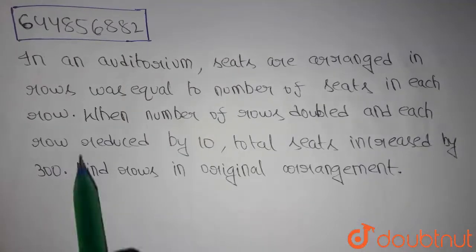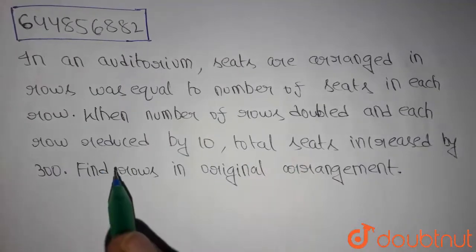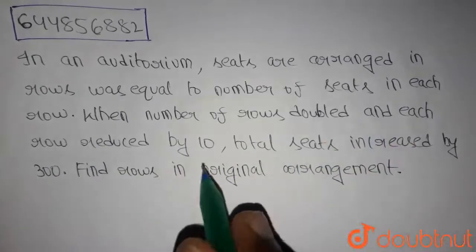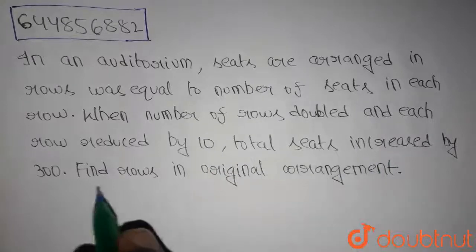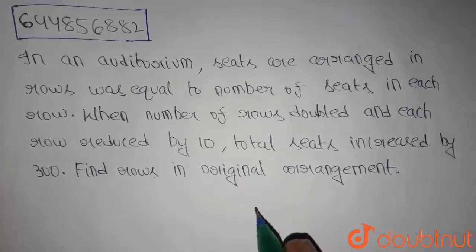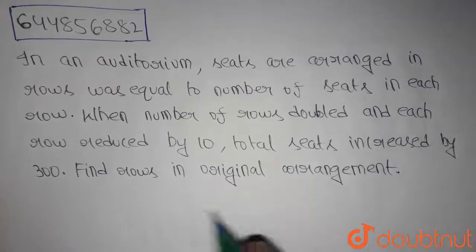Hello guys, this is our today's question. In an auditorium, seats are arranged in such a way that rows are equal to the number of seats in each row. When the number of rows are doubled and each row is reduced by 10, the total seats increased by 300. Then we have to find the number of rows in the original arrangement.